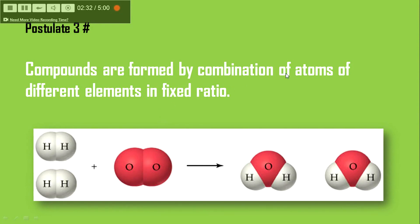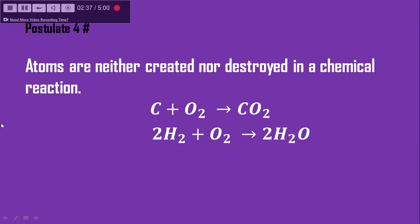The final postulate states that atoms are neither created nor destroyed in a chemical reaction. What happens is only the rearrangement of atoms — atoms rearrange but are neither created nor destroyed. Let's understand this with two simple reactions.